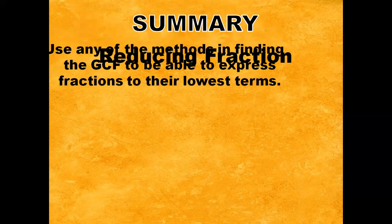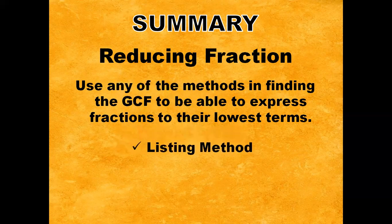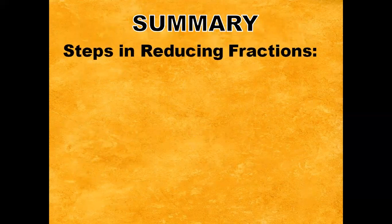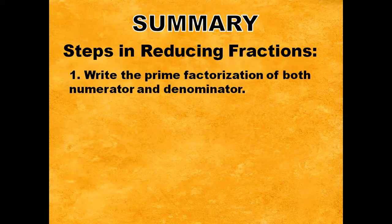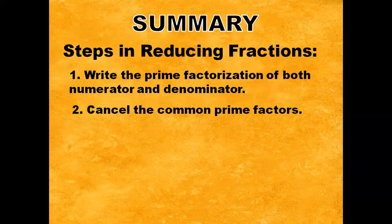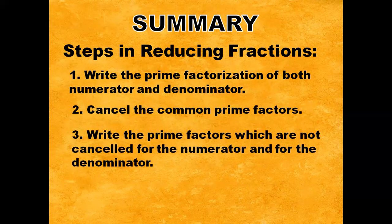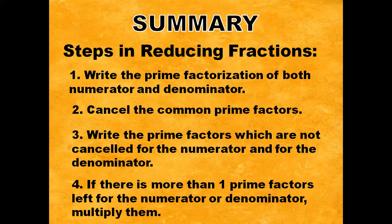Always remember: in reducing fractions, use any of the methods in finding the GCF to be able to express fractions to their lowest terms. You may use the Listing method, Prime Factorization method, or Continuous Division method. Here are the steps in reducing fractions — Step 1: Write the prime factorization of both numerator and denominator. Step 2: Cancel the common prime factors. Step 3: Write the prime factors which are not cancelled for the numerator and denominator. And last, if there is more than one prime factor left for the numerator or denominator, multiply them.